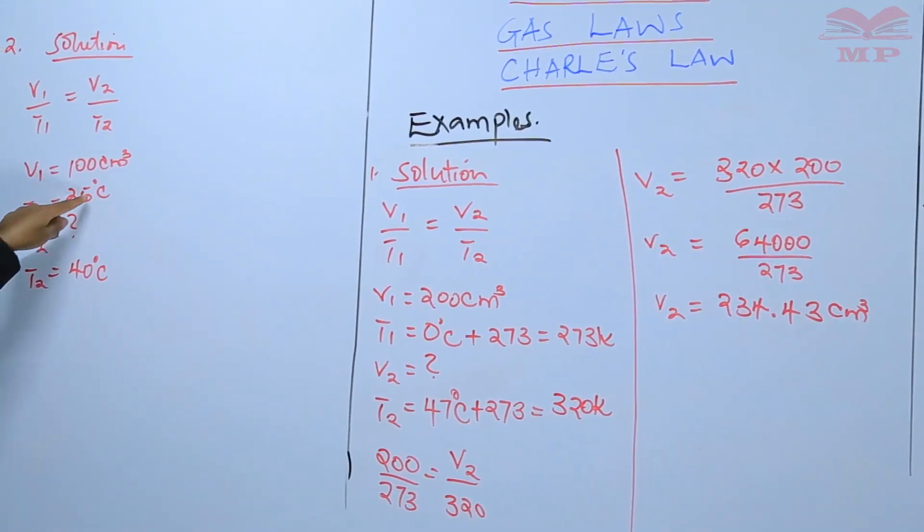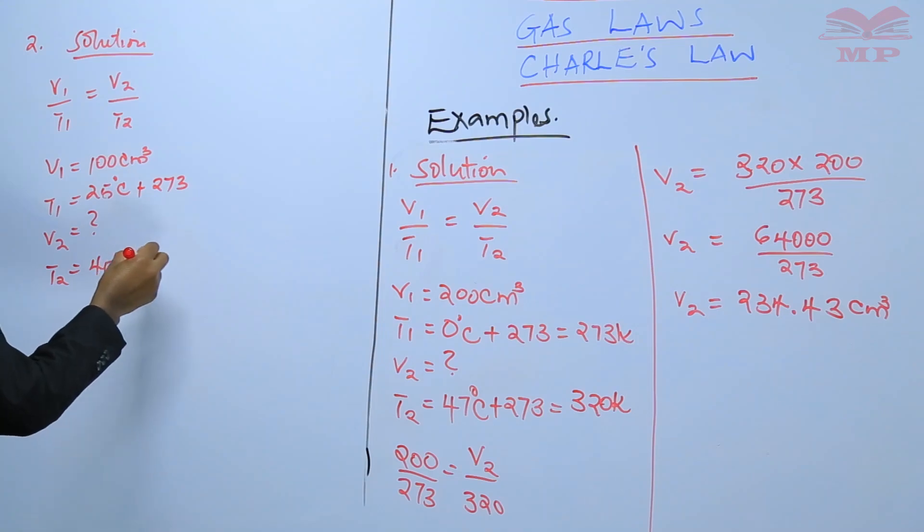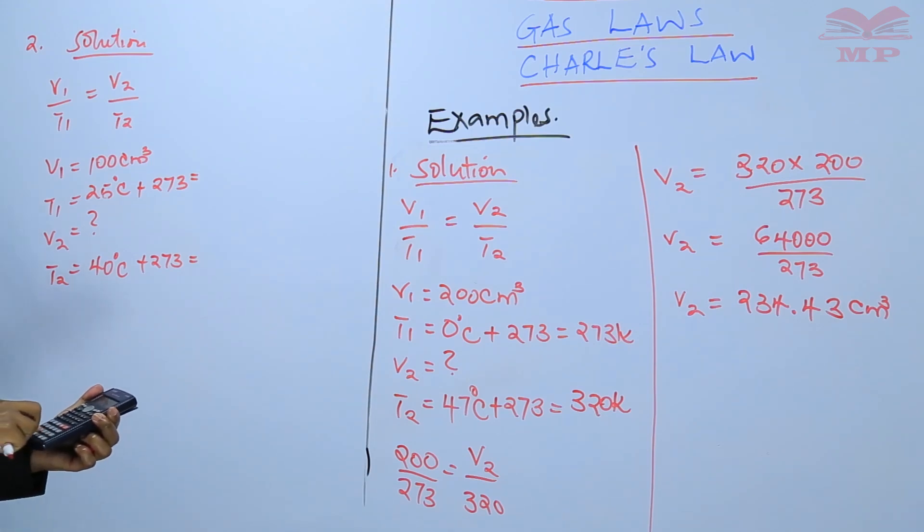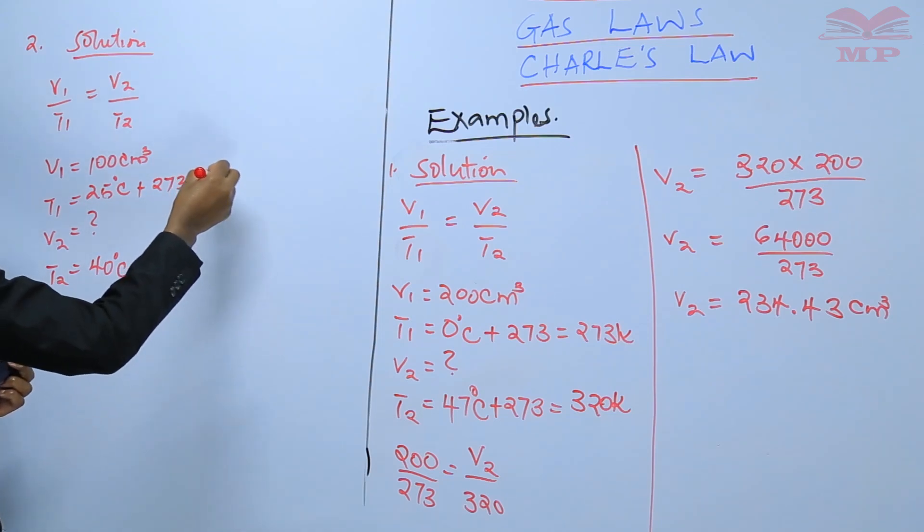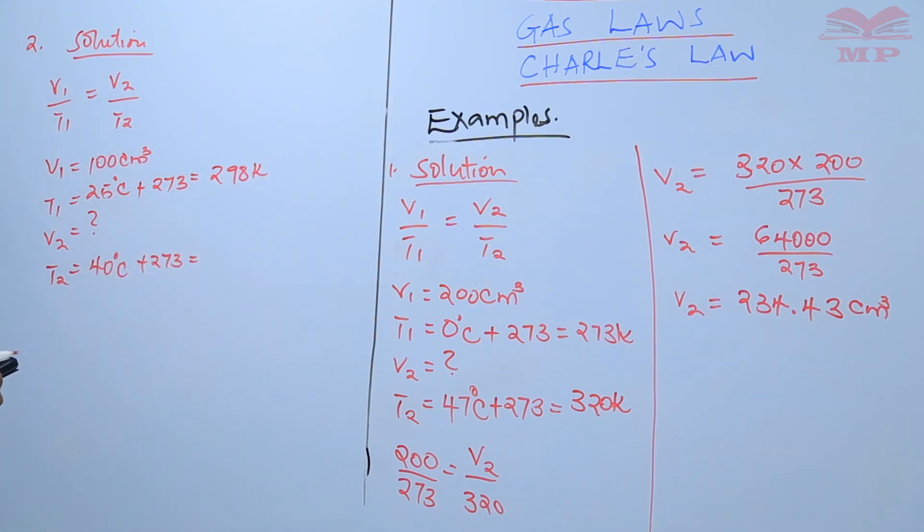Again, don't forget to convert these temperatures into Kelvin. So, you add 273, and you add 273 to make them Kelvin. Therefore, 25 plus 273, this gives you 298 Kelvin. And again, you add 273. This gives you 313 Kelvin.